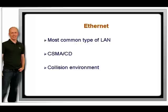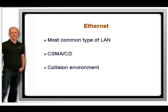CSMA/CD — Carrier Sense Multiple Access with Collision Detection — is the method Ethernet uses to deal with collisions. When a host wants to transmit, it first listens to the wire to see if anyone else is transmitting. If it is clear, it can transmit; if not, it will wait. Sometimes two hosts decide at the same instant that the wire is clear and collide. When this happens, the hosts send a special jam signal advising everyone on the segment of the collision. Then all hosts wait for a random period of time — a few millionths of a second — determined by the Backoff algorithm, a mathematical equation used to generate a random wait time so the wire should be clear for all hosts when they try again.